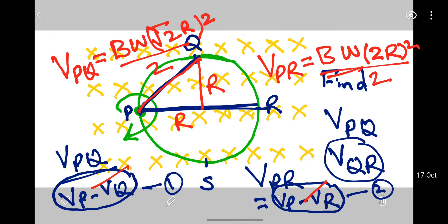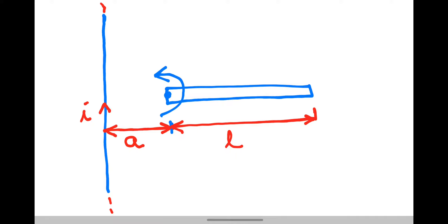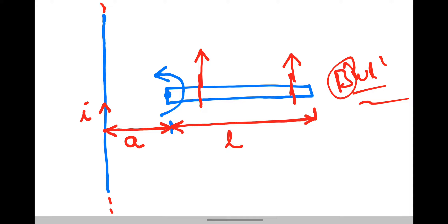That was simple. Now let's do the next problem. There is an infinite wire which creates a magnetic field. You have known this story for a long time — the magnetic field due to this wire varies with distance. So the magnetic field here and the magnetic field there will be different, and similarly the velocity at different points will also be different.